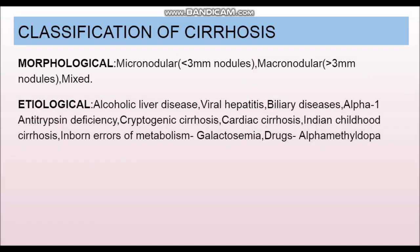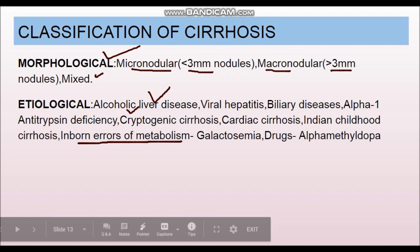Going to the classification of cirrhosis — it can be classified by morphology and etiology. Morphologically, micronodular cirrhosis has nodules less than 3 mm, and macronodular has nodules more than 3 mm; many cases are mixed. Etiologically, causes include alcoholic liver disease, viral hepatitis, biliary diseases, alpha-1 antitrypsin deficiency, cryptogenic cirrhosis, cardiac cirrhosis, Indian childhood cirrhosis, inborn errors of metabolism, and certain drugs.